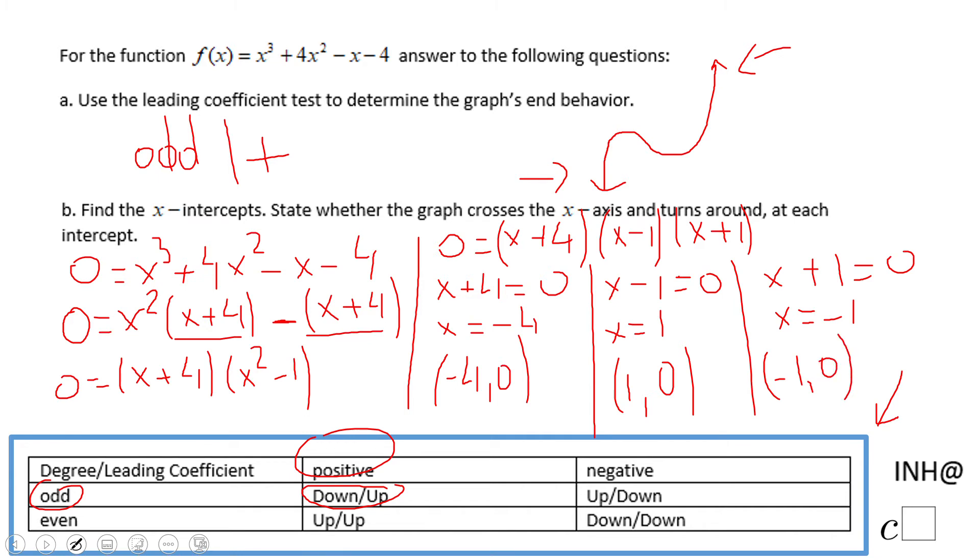So we have now the three x-intercepts of this guy. Now we can go to the last part of this point B. We need to see if it crosses or touches and turns around at each x-intercept.